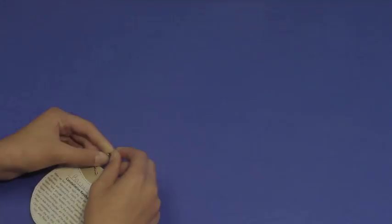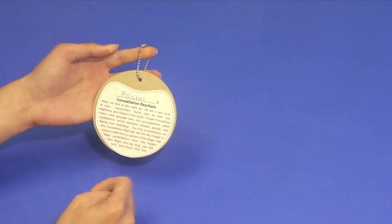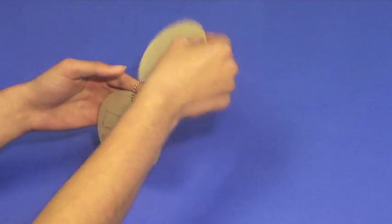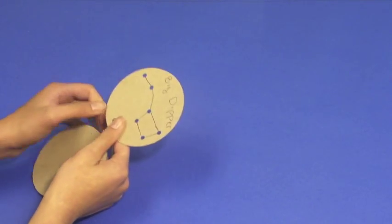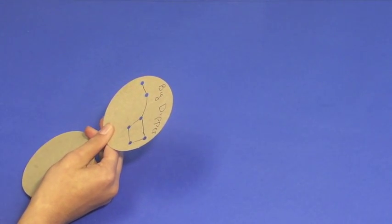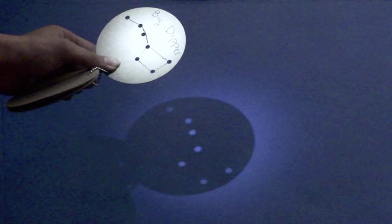You are now ready to use the Starry Starry Day constellation cards to display a constellation during the daytime. You can do this outside using the brightness of the sun, or inside by dimming the lights and using a flashlight. The light that shines on the disk will create a shadow, leaving white dots to represent each of the stars in the constellation.